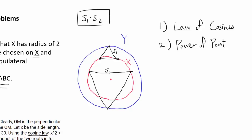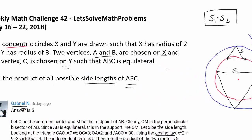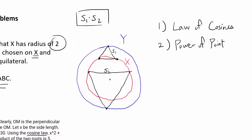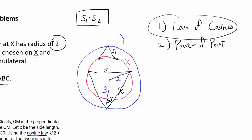We know the radius of circle X is 2 and radius of circle Y is 3, so we need to connect the side lengths to these radii. By drawing a radius of length 2, we see this triangle has sides X, 3, and 2, with 30 degrees between them — half of the 60-degree angle of the equilateral triangle. We can use law of cosines to find X.